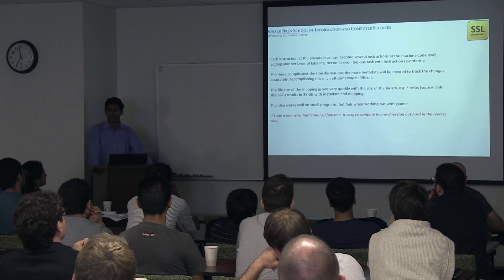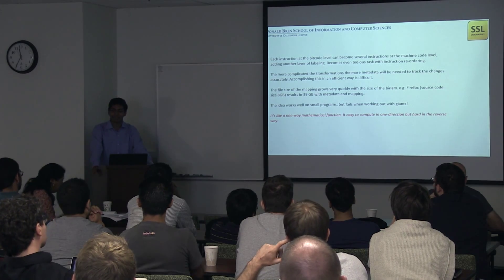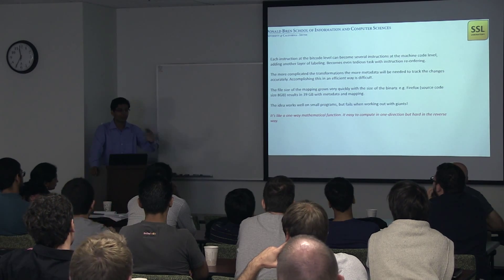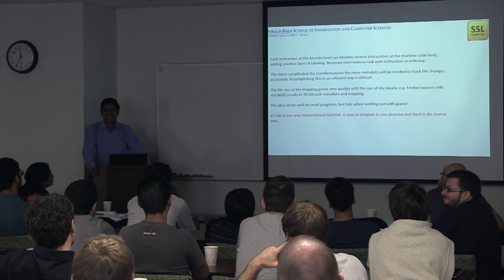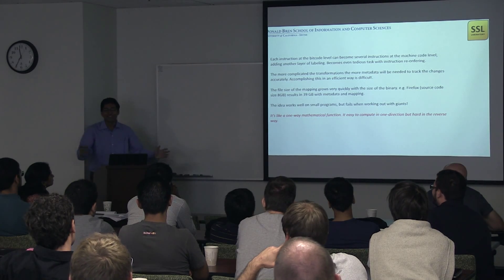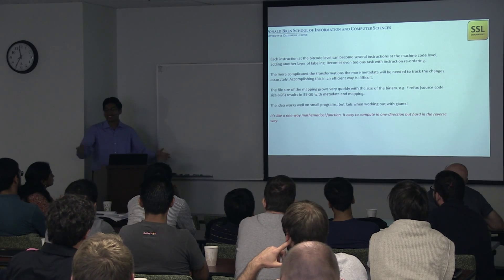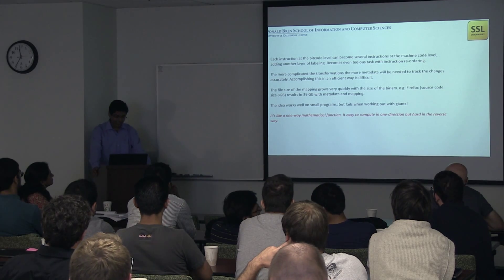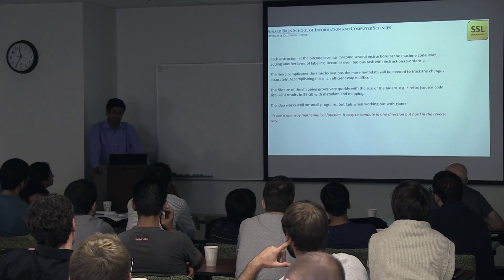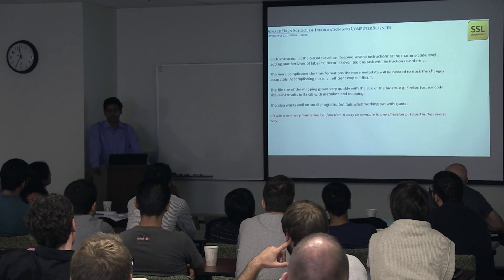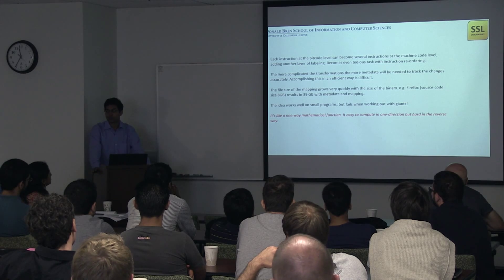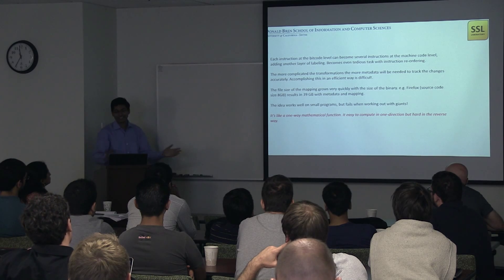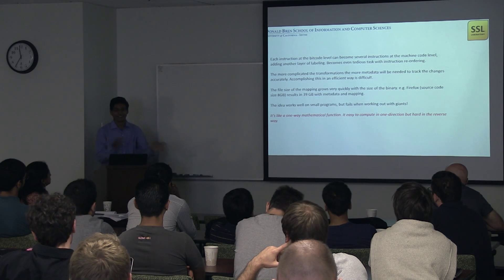The file size issue: the Firefox source code was about 8 gigabytes, and when I compiled it generating my own metadata and trying to map around, that blew up to 39 gigabytes. So a diversified Firefox has a file size of 39 gigs compared to 8 gigs today. The idea works fairly on small programs like a Hello World program, but it doesn't work on bigger programs. It's basically like a one-way mathematical function — easy to compute in one direction, but difficult to reverse.